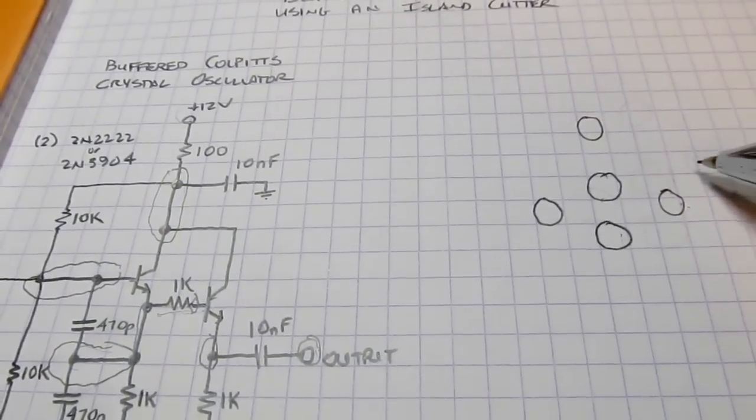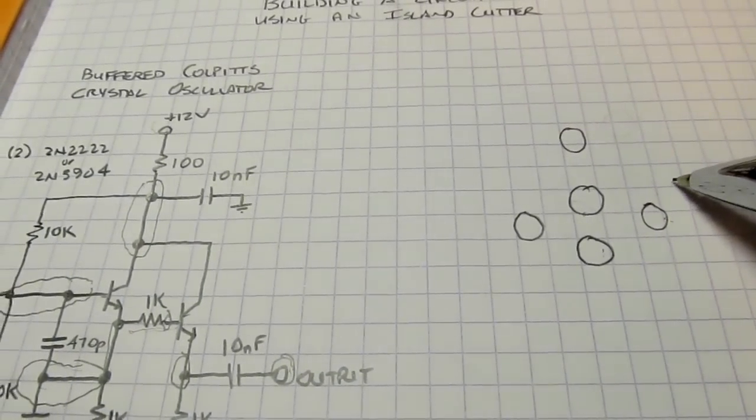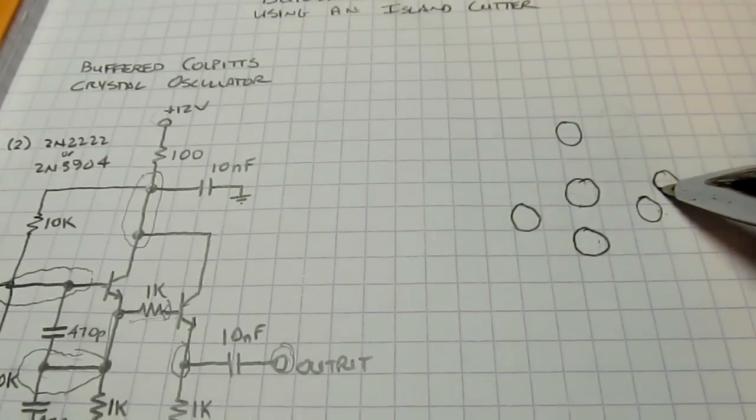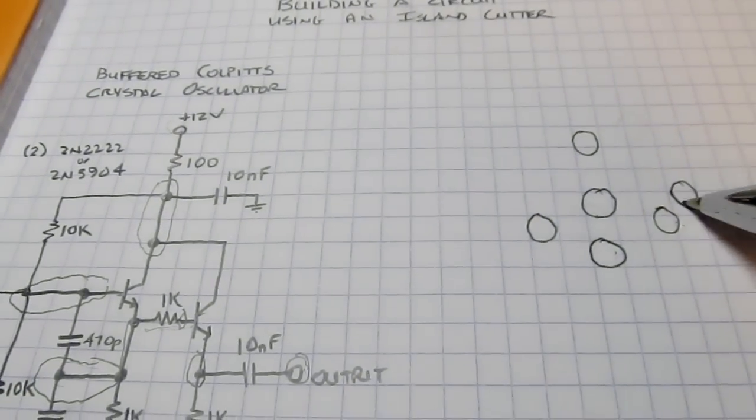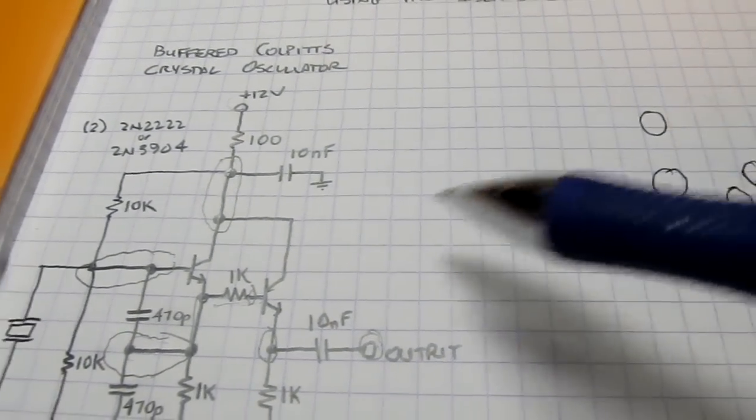So the emitter is going to really want to be somewhere up over here, considering the layout on the base, or excuse me, on the package itself. So that'll be our emitter connection now for this.